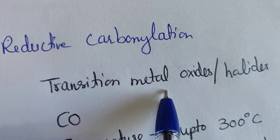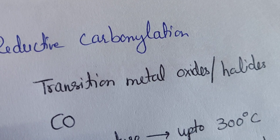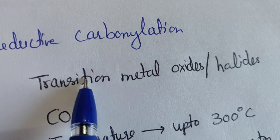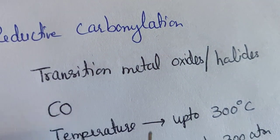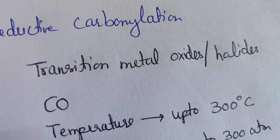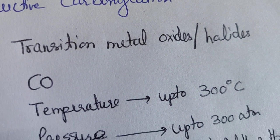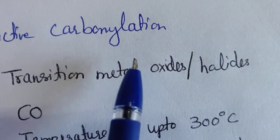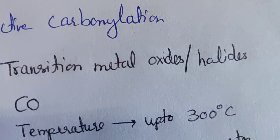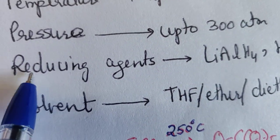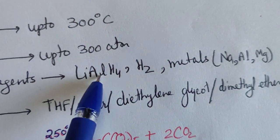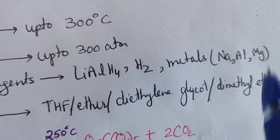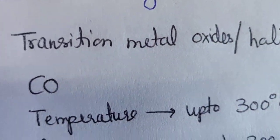In reductive carbonylation, the transition metal oxide or halide must be reduced to the metal. So the requirements are: first, a transition metal oxide or halide; second, reducing agents such as LiAlH4, H2, or metals like Na, Al, or Mg; and third, carbon monoxide as the carbonyl source.